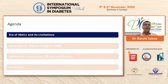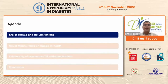I'm going to talk about the era of A1C and its limitations, then time in range in type 2 diabetes. We know it is almost established for type 1 diabetes patients, but I'll be talking more for type 2 as well. We would also like to understand whether this new metric — time in range — is directly related with complications or not, and then we will conclude.